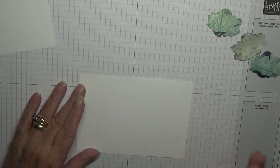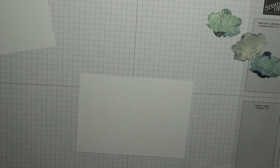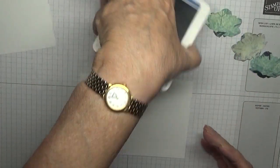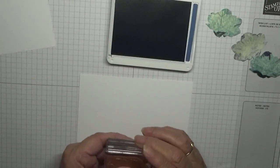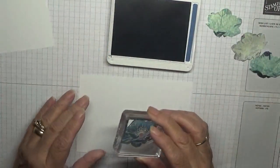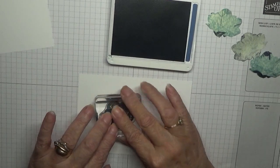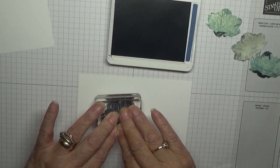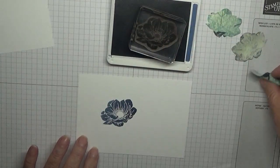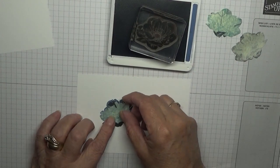Now we're going to ink. I'm using my Misty Moonlight, not got used to these names. With the large flower, ink up and I'm going to stamp that at an angle. That's nice.